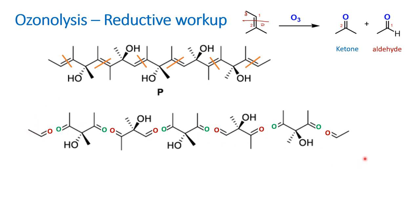Now the question is: in the 7 molecules, which is chiral? For a carbon to be chiral, we need 4 different groups attached. So if we look at the OH group, there is a hint — one particular carbon is a chiral carbon.